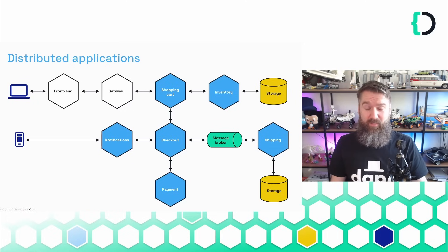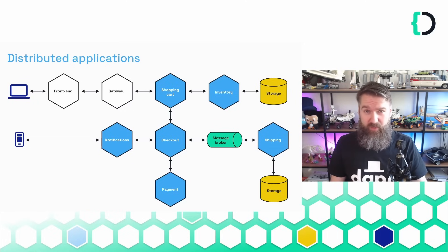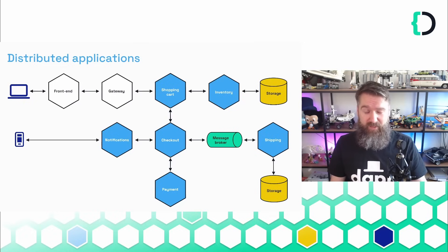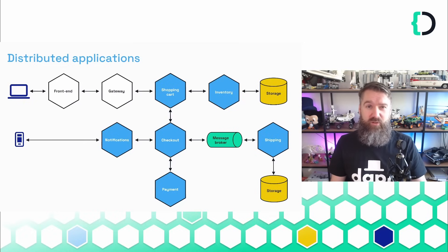Building distributed applications is hard. You have to think about service-to-service communication, either synchronous or asynchronous via a message broker, and you need to ensure that your applications are secure, reliable, and properly configured for observability.